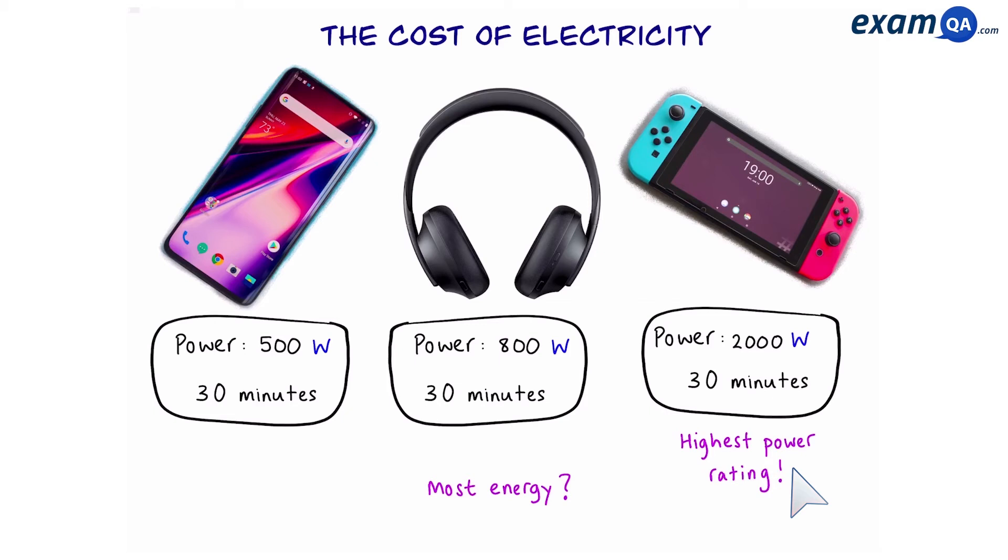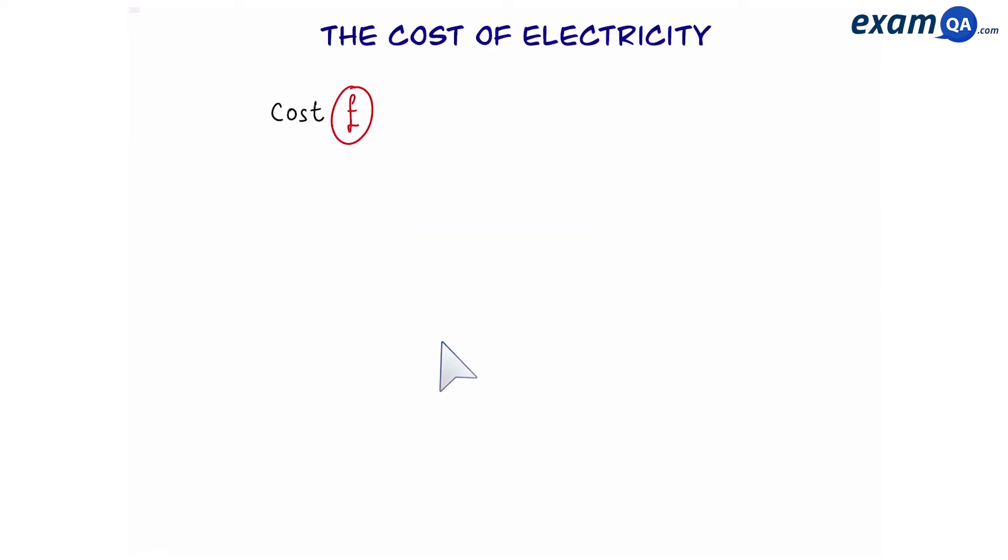Now that we know how to work out energy used, how about how much does it cost us to use these devices? To work out the cost all we have to do is follow this easy equation. Cost equals kilowatt hours times by price. Don't worry if you get confused. What does kilowatt hours mean? Kilowatt hours is just another way of saying how much energy is transferred per hour. To do this we times the kilowatts with the number of hours used.